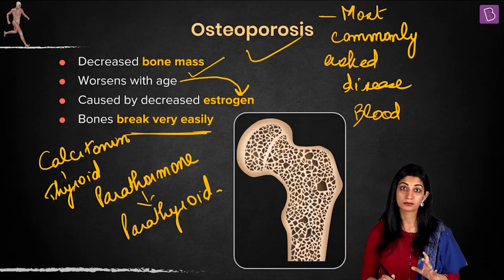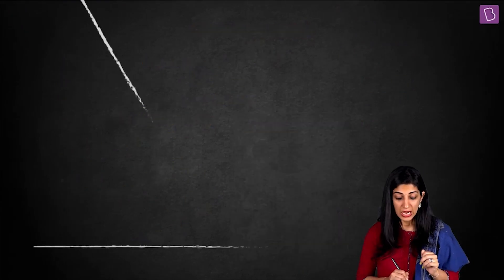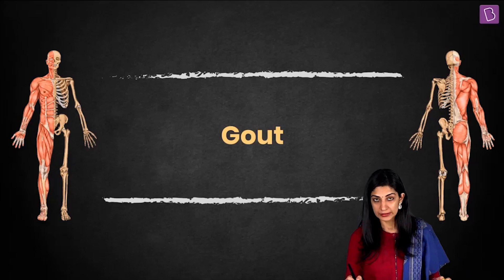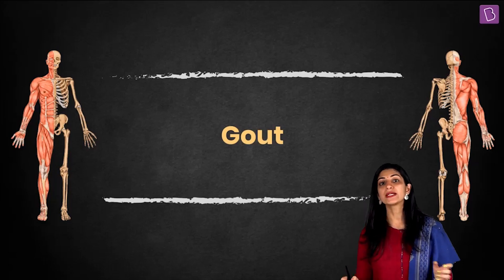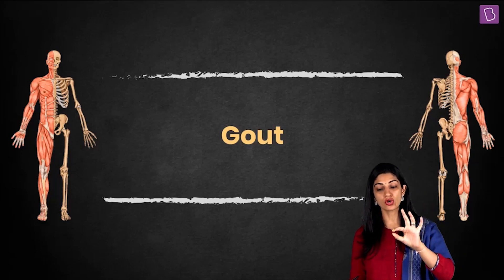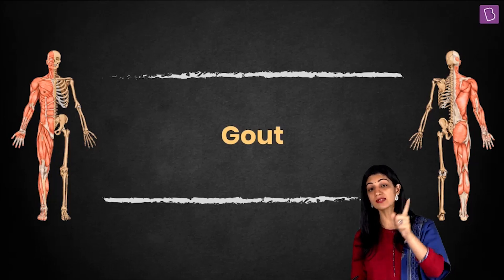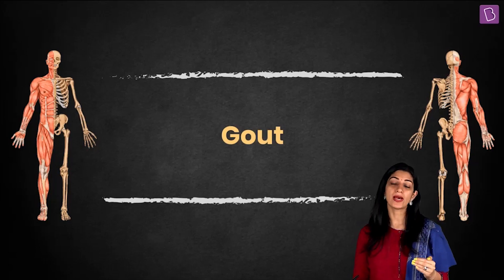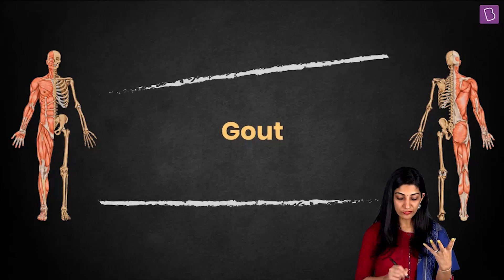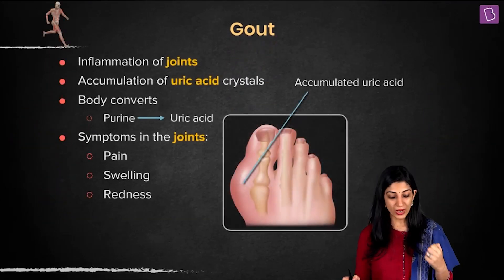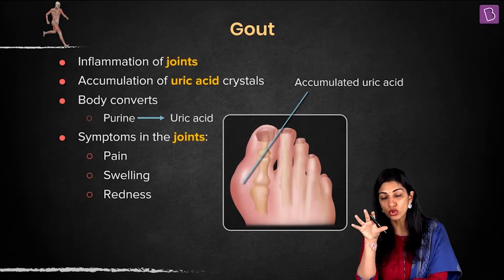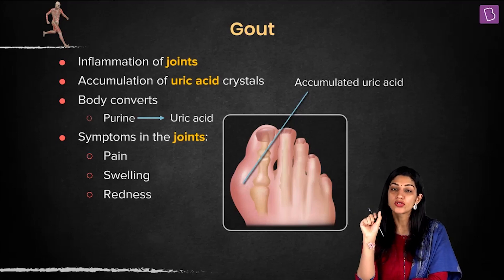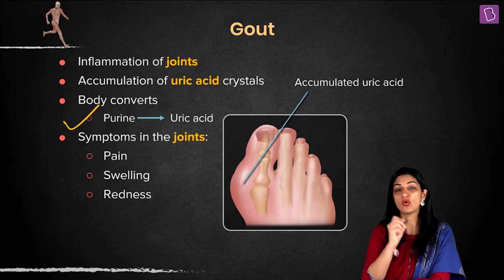Now, apart from osteoarthritis, there is another type of joint inflammation called gout. Although urea is the main waste product eliminated by the kidneys, our bodies also produce some uric acid as a result of purine metabolism — which was covered in the excretory system chapter. This uric acid, if it accumulates in the body, forms crystals.